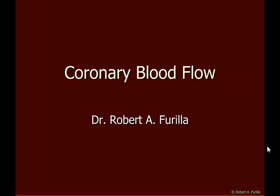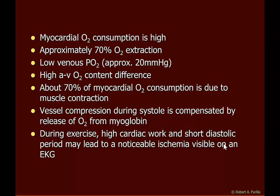Let me talk about coronary blood flow — an introduction. First, let's talk about myocardial oxygen consumption, which is very high. About 70% of the oxygen delivered is extracted by the heart. This leads to a low venous PO2, approximately 20 mmHg, leaving the heart. The normal mixed venous PO2 is about 40 mmHg, so this is low and leads to a very high arteriovenous oxygen difference.